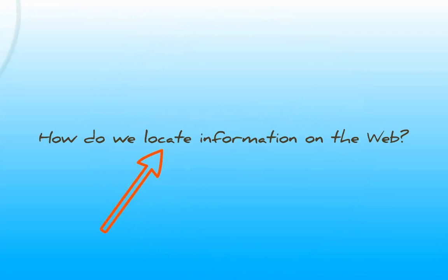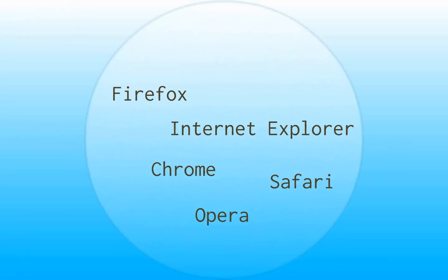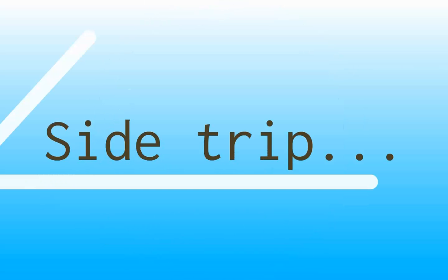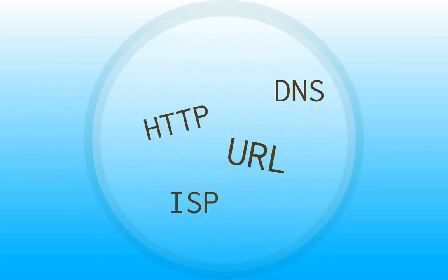How do we locate information on the web? We start with a web browser — Firefox, Internet Explorer, Chrome, Safari, some sort of a browser. There's a lot of terminology related to the web that you may or may not know, and there is a handout in the classroom about web terminology as well.